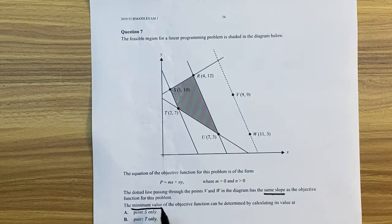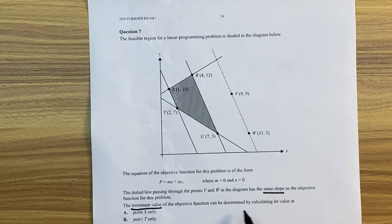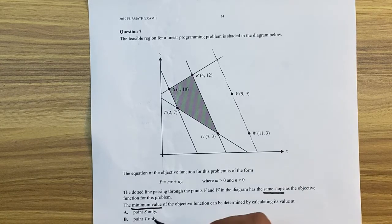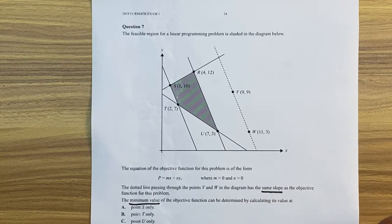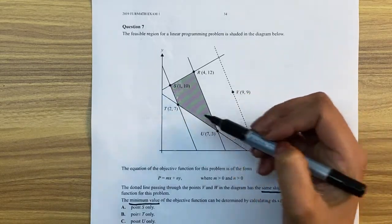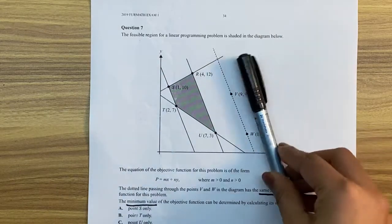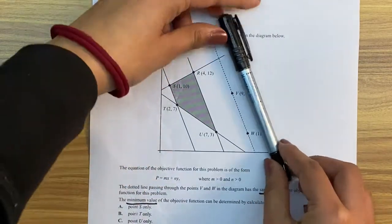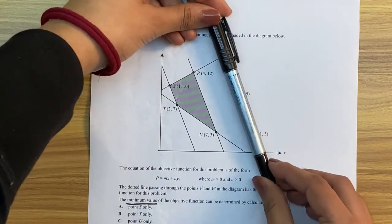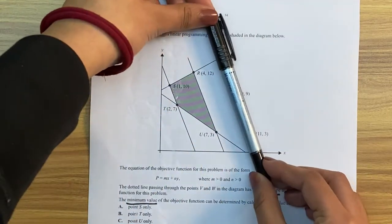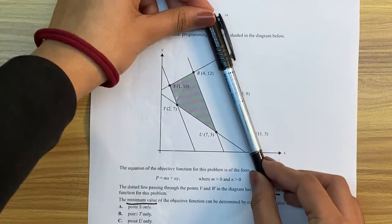The minimum value of the objective function can be determined by calculating its value at, so we've got to find which of these points is going to be the minimum value this time. So because we're looking for a minimum, we actually have to slide downwards. So we align our pen or our ruler with the line that we have, and we're sliding down because we want to find the minimum.